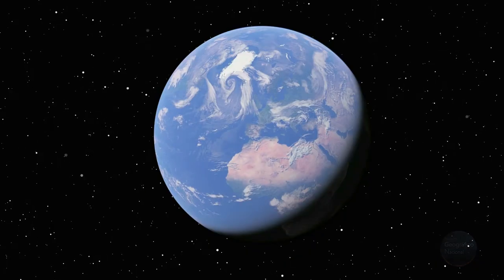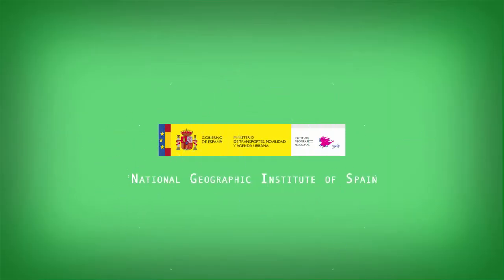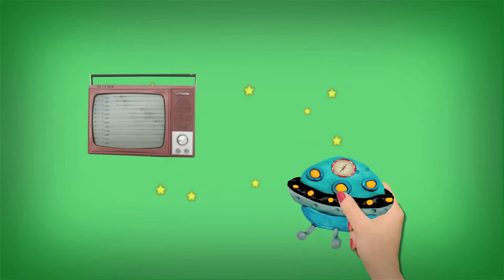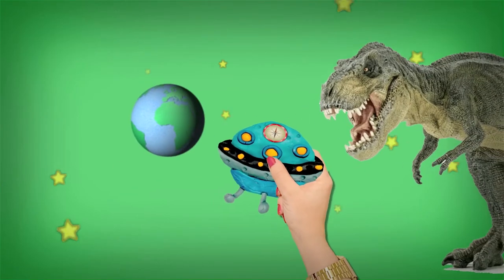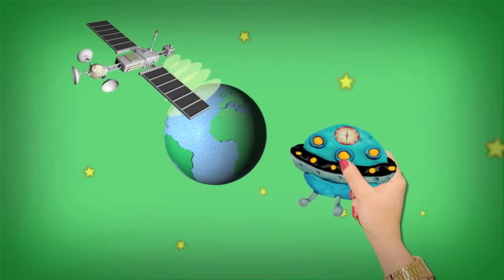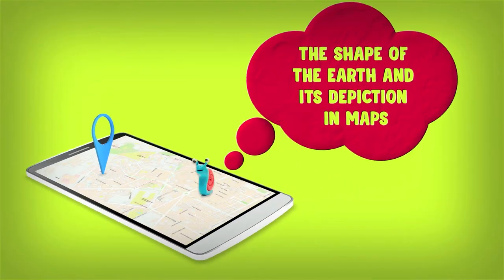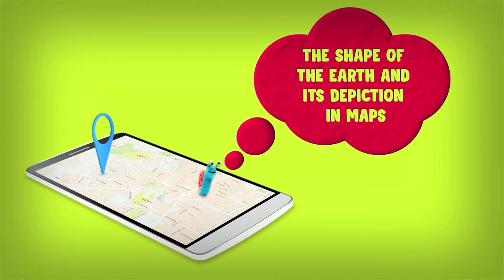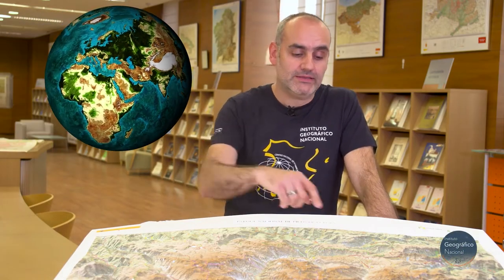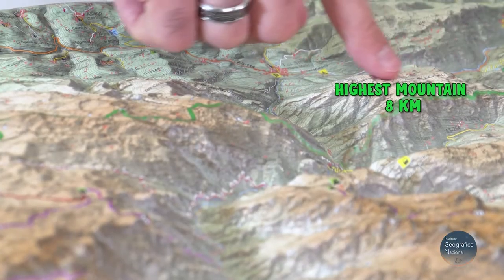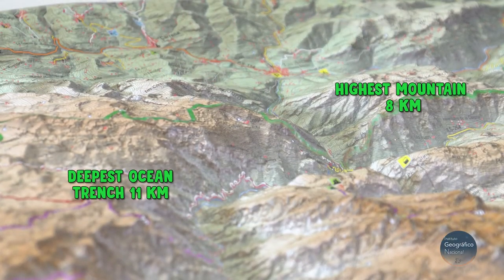Do you still think that the Earth is flat? Images taken from different points of view from space are among the evidence that shows that it is sphere-shaped. The Earth is spherical in shape, but it is not a perfect sphere. It has a rough surface due to the relief of the mountains and seabeds.